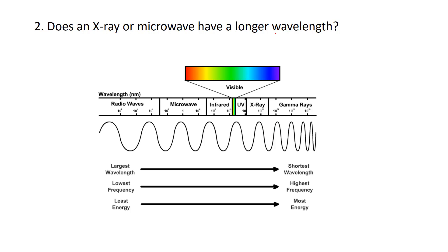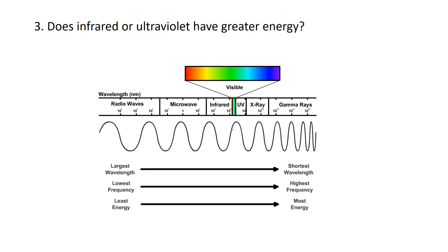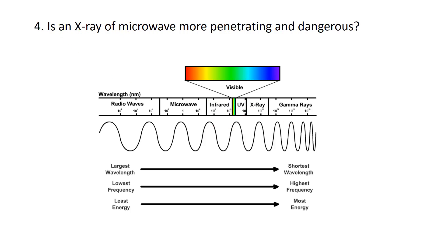Does X-ray or microwave have a longer wavelength? The longer wavelength is closer to the left side, so microwave has the longer wavelength. Does infrared or ultraviolet have greater energy? Energy goes with frequency, and the greatest frequency is further to the right, so UV light has greater energy. Is an X-ray or microwave more penetrating and dangerous? Further to the right is worse, so X-ray is more penetrating and dangerous.